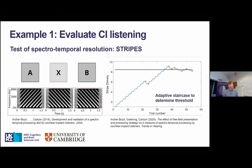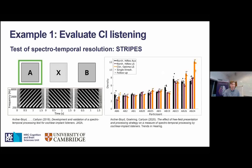Here's a quick example of what we do. We have a spectrotemporal resolution test called STRIPES, developed by Alan Archer-Boyd here at the CBU together with Popper Line. It uses three sounds — shown here as spectrograms — one of which always moves upward in frequency while the other two move downward. The listener identifies the upward-moving sound, and this gets progressively harder until we reach a perceptual threshold measured with an adaptive procedure. We evaluated whether this test works in a clinical environment where acoustic parameters can't be fully controlled, comparing a direct connection against loudspeaker presentation, and found the test is very robust.